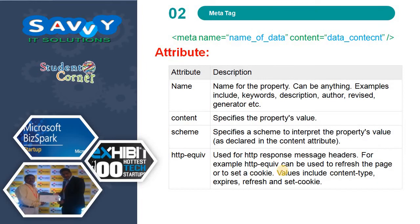Already we know a few attributes — we discussed name and content attributes. Apart from these, there are schema and http-equiv. Schema is used to interpret the property value. http-equiv is used for HTTP response message headers. For example, http-equiv can be used to refresh the page or to set a cookie. Values include content-type, expires, refresh, and set-cookie.